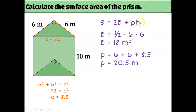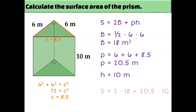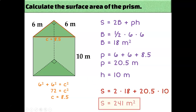The last thing I need in my formula is the height of the prism, which is the distance between the two bases — conveniently labeled as 10 meters. Now that I know B, P, and H, I can fill them into the formula and use the calculator to get my answer of 241 square meters.